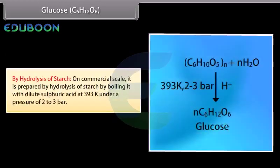By hydrolysis of starch: on commercial scale, it is prepared by hydrolysis of starch by boiling it with dilute sulfuric acid at 393 Kelvin under a pressure of 2 to 3 bar.